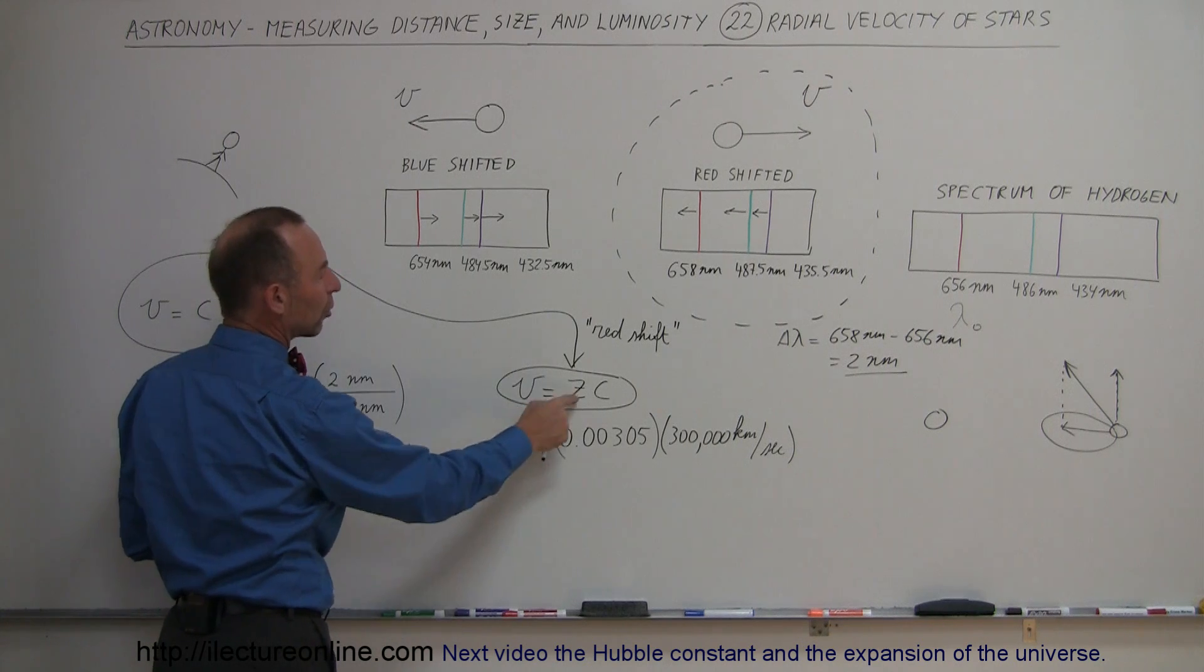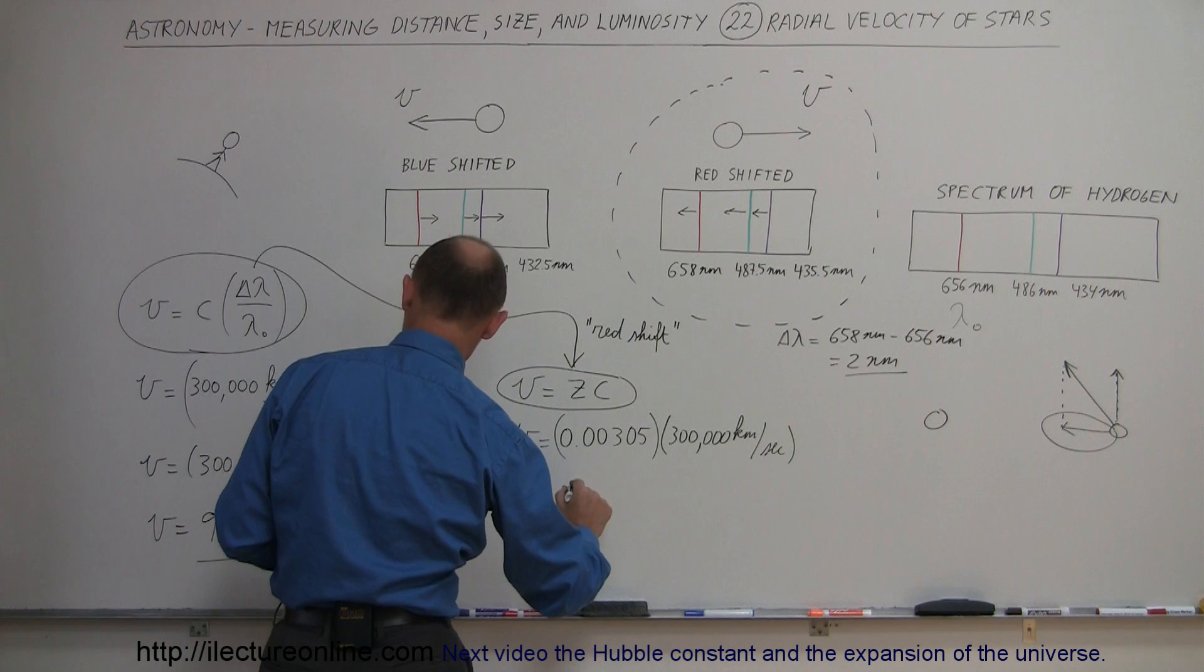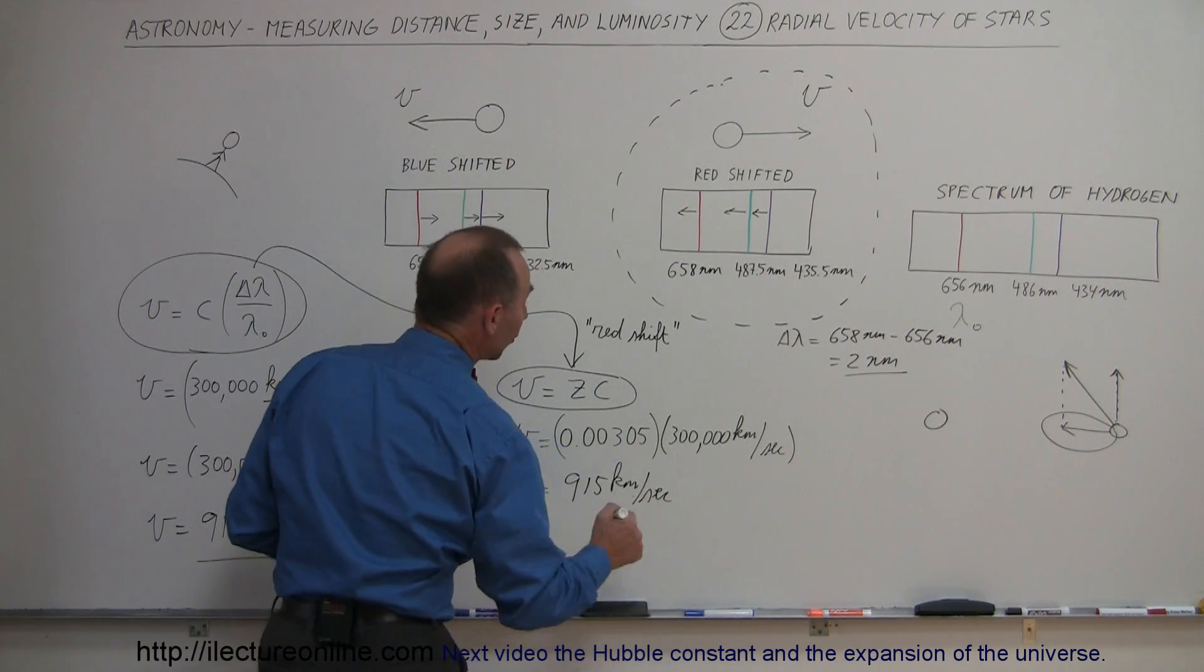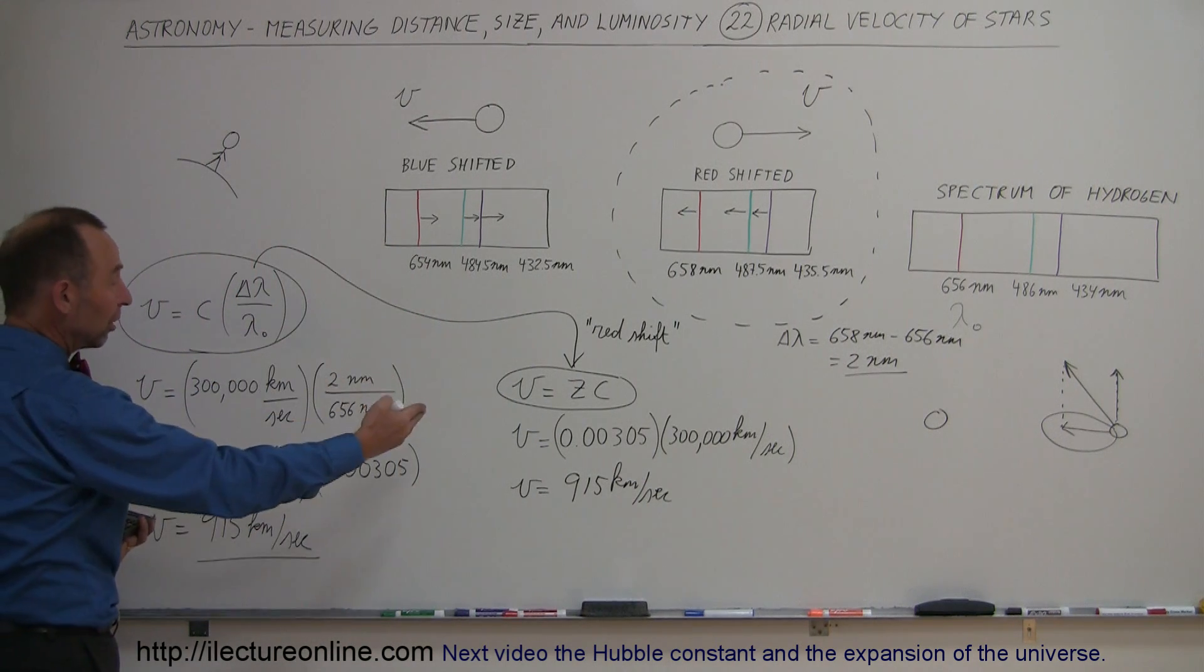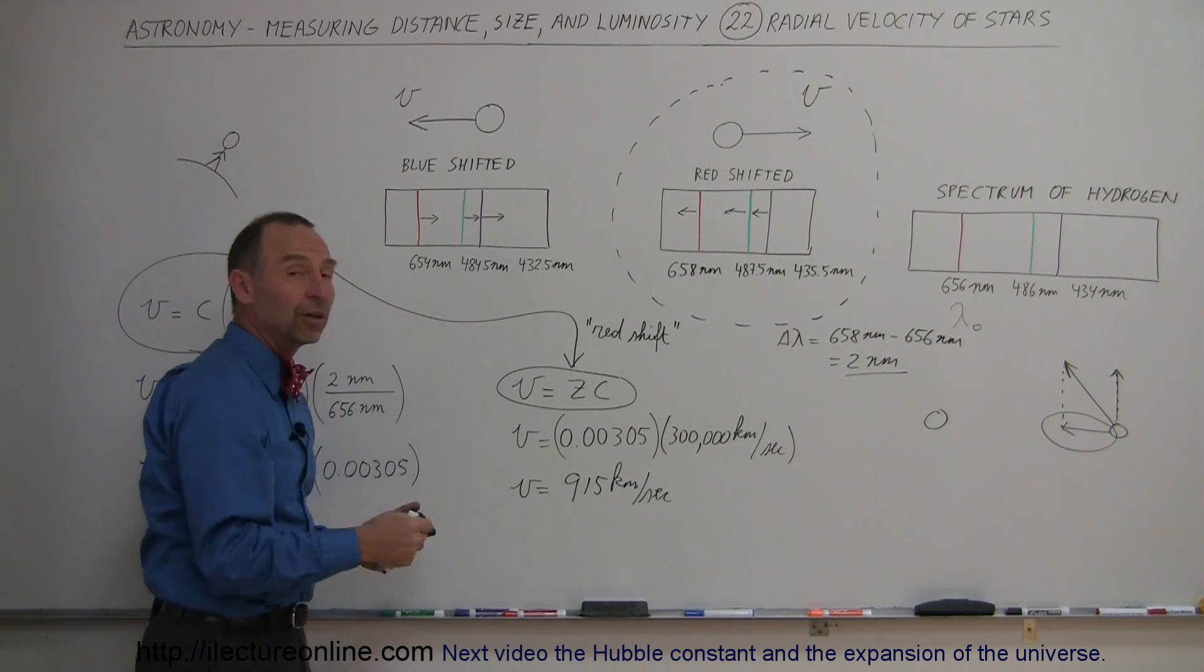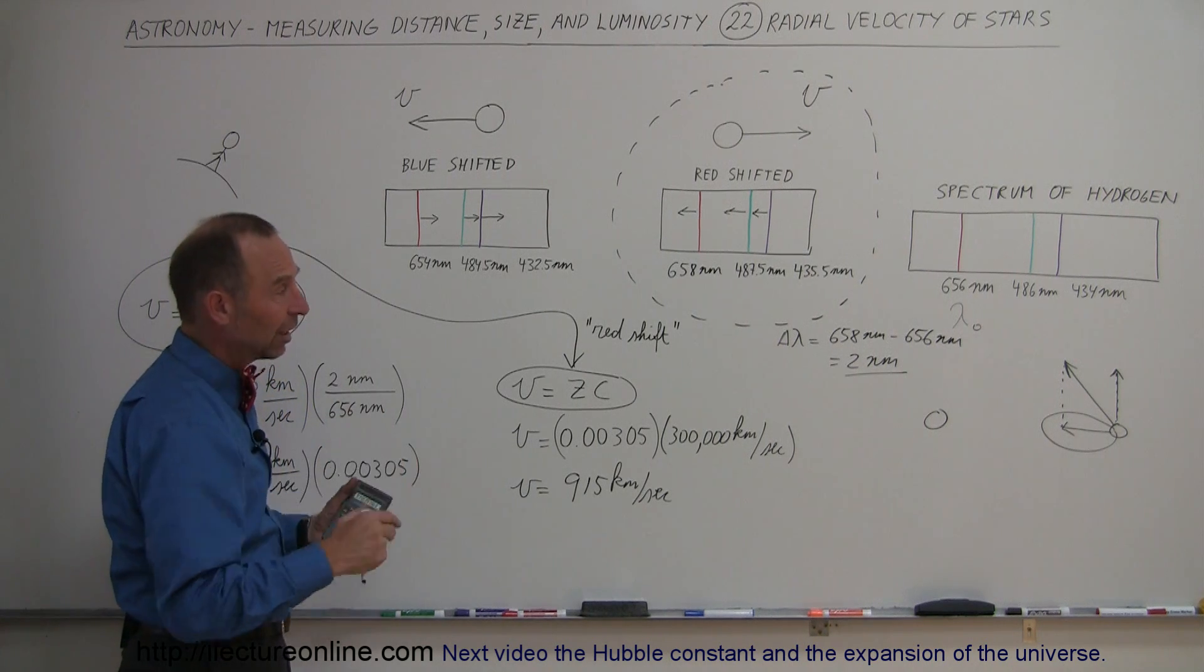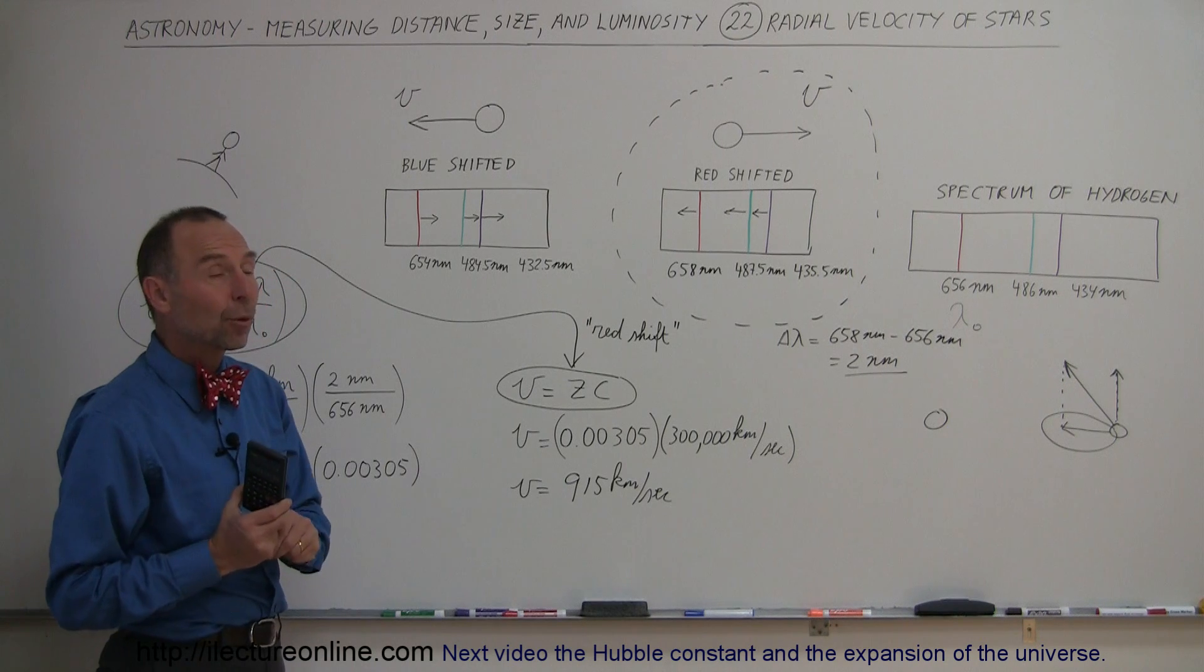So, they call that the redshift. And so, the velocity is equal to the redshift times the speed of light. And so, again, if you do it like this, you get the same number of 915 kilometers per second. If it's blue shifted and it's moving towards us, you can then call it a blue shift. Plug in the number. You may want to call it a negative because then the number is getting smaller, which means then it's moving towards us rather than away from us if that makes it clearer for you. But that is a very important thing.